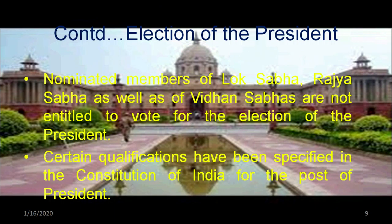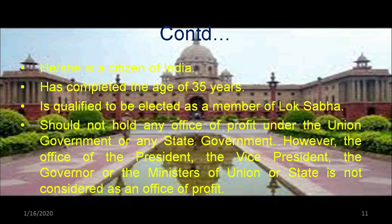There are certain qualifications for a person to become president: he should be a citizen of India, should have completed the age of 35 years, and should not hold any office of profit under the union government or any state government. However, the offices of the president, vice president, governor, and ministers of the union or state are not considered offices of profit. These are the people who take major decisions and appoint heads of major divisions.